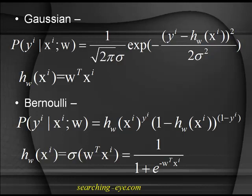And for the Bernoulli distribution, probability of y given x_i parameterized by w is h_w(x_i) to the power y_i times 1 minus h(x_i) to the power 1 minus y_i. Replacing h(x_i) with phi gives phi to the power y_i times 1 minus phi to the power 1 minus y_i. This is the Bernoulli distribution.